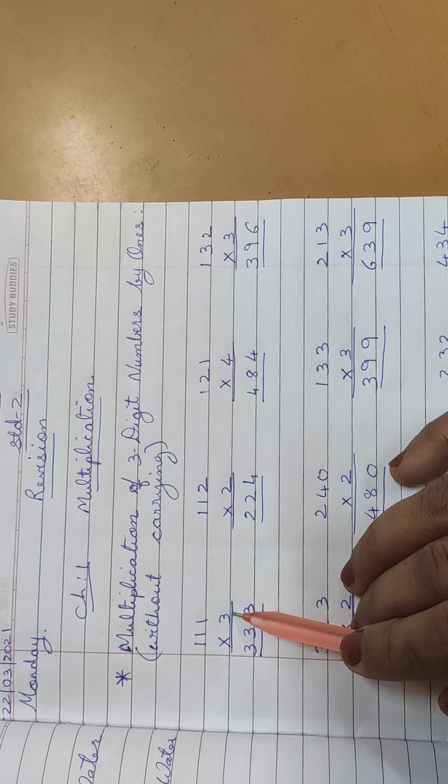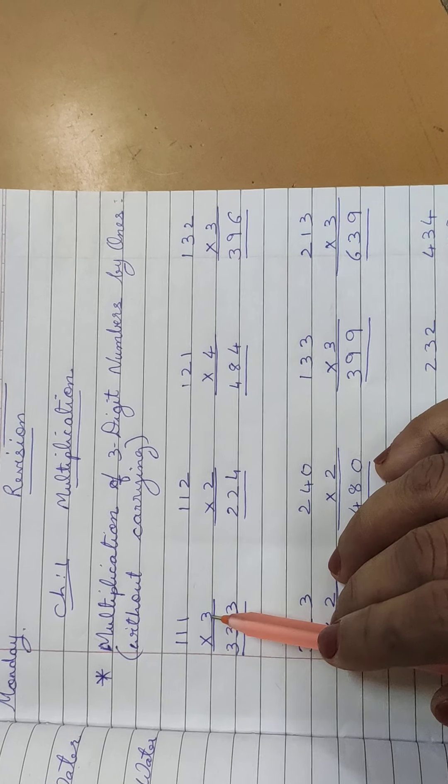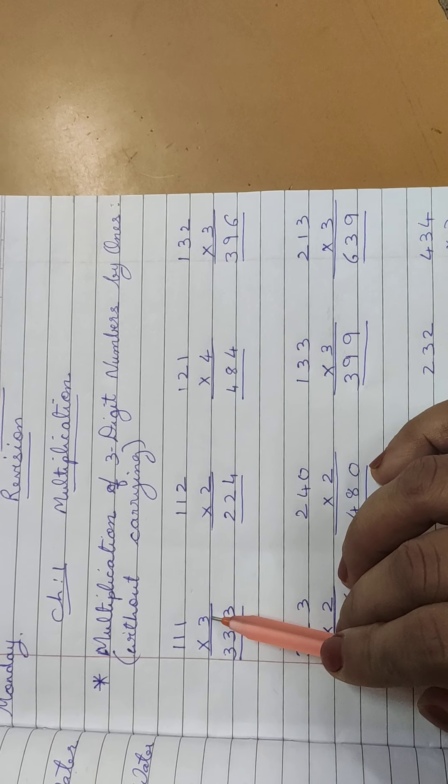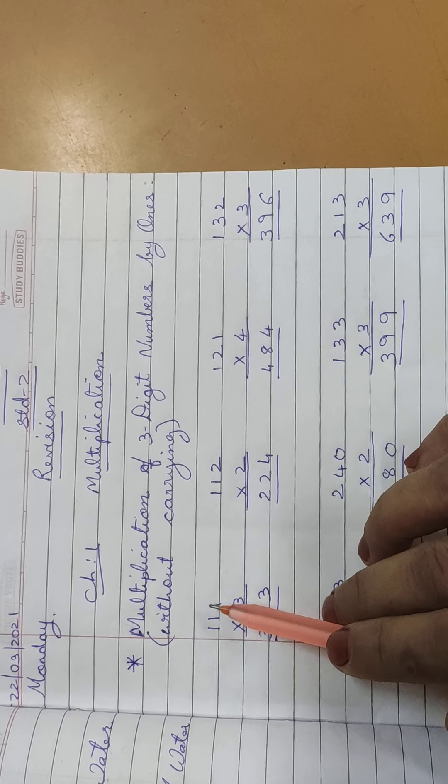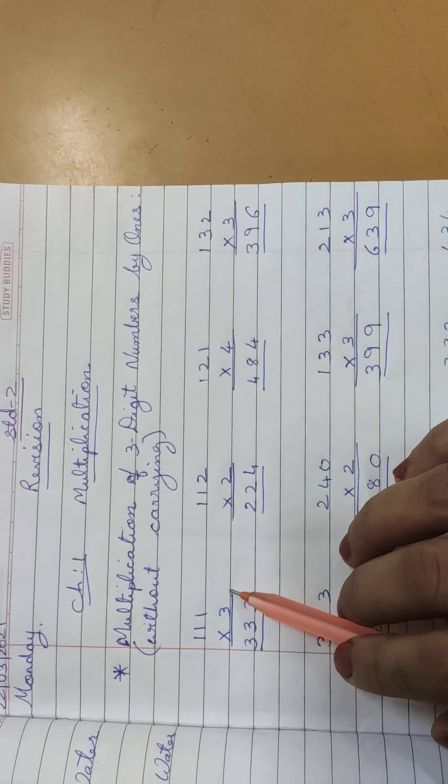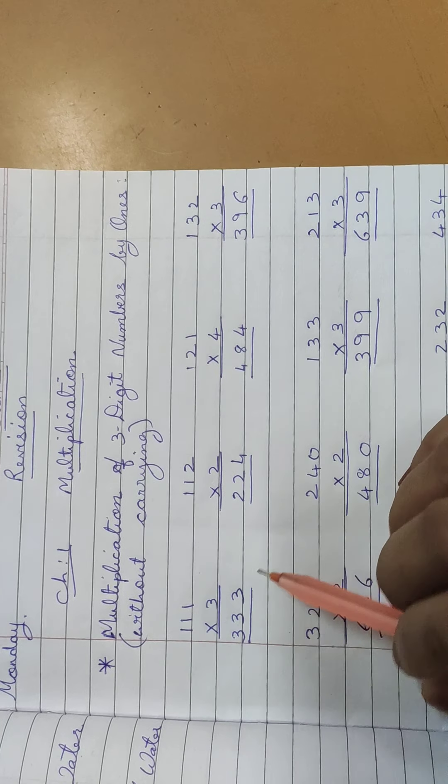We'll multiply this with once. One number is called once. We'll multiply with once and these are without carrying sums. Just like we did 2 digit and 1 digit multiplication, same way, but this time we're multiplying with 3 numbers.